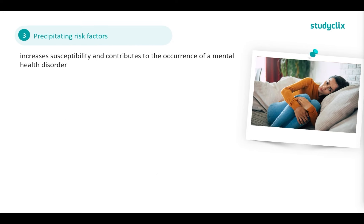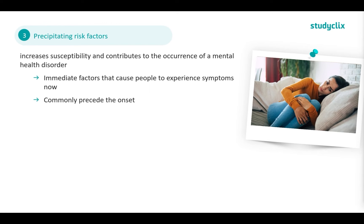Next, we have precipitating risk factors. This increases the susceptibility and contributes to the occurrence of a mental health disorder. This is an immediate factor that causes people to experience symptoms right now, and these commonly precede the onset of the disorder. For example, if you go through a relationship breakup or you have a lot of exam stress, this can trigger the onset of a mental health disorder. A relationship breakup may lead to a period of depression and high anxiety, and prolonged stress can also contribute to and trigger the onset.